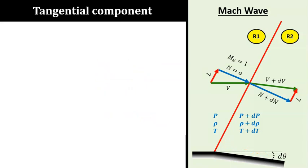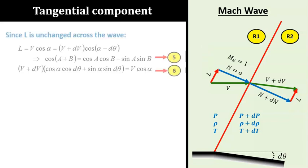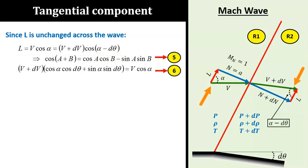One important fact that we have to use is that the tangential component of the velocity L does not change. This is labeled before and after the wave as the red vectors. We can write that fact as a mathematical statement in the first line here. From the geometry, you can work out the angle α before the wave and α minus dθ after the wave. Using the trigonometric identity in equation 5, we can expand the cosine α minus dθ term to finally get equation 6.